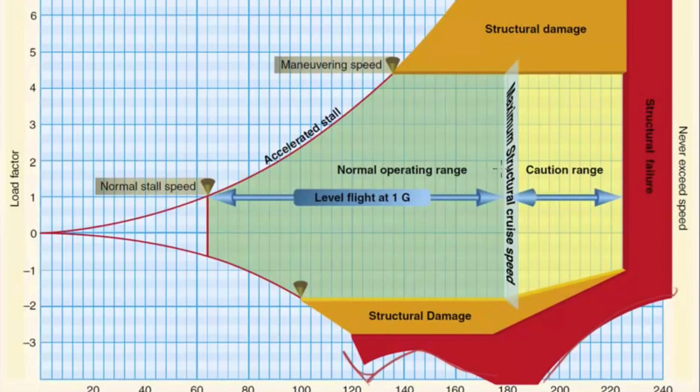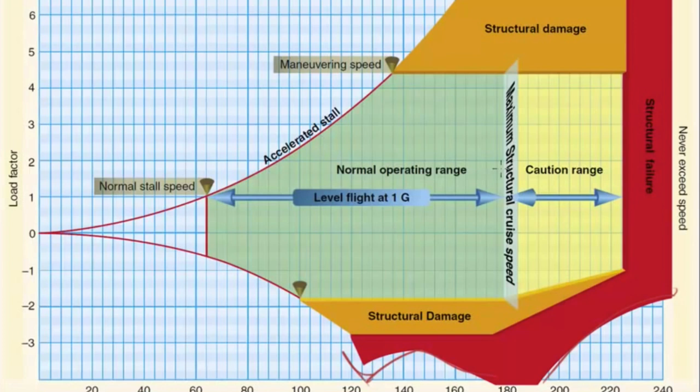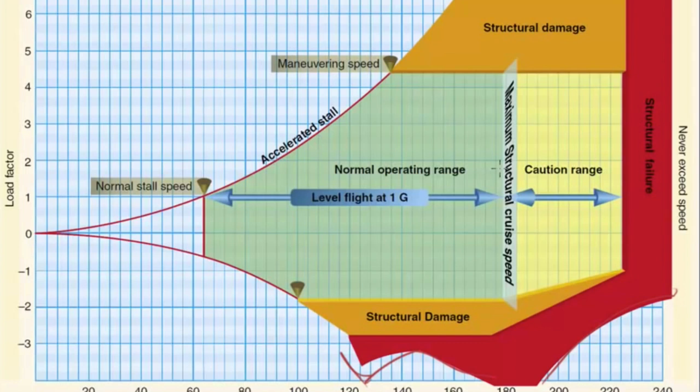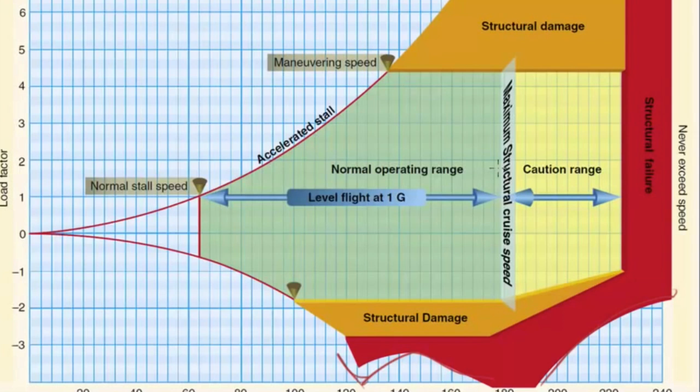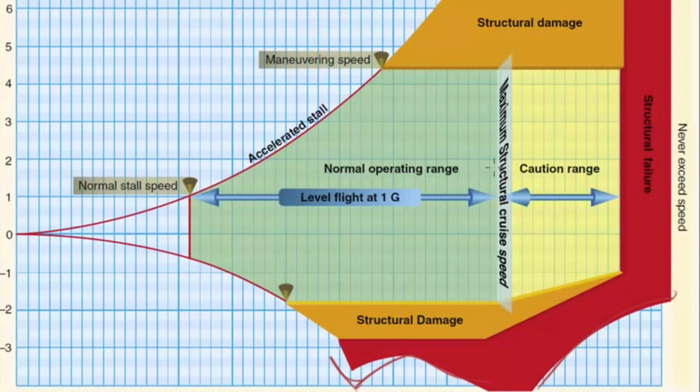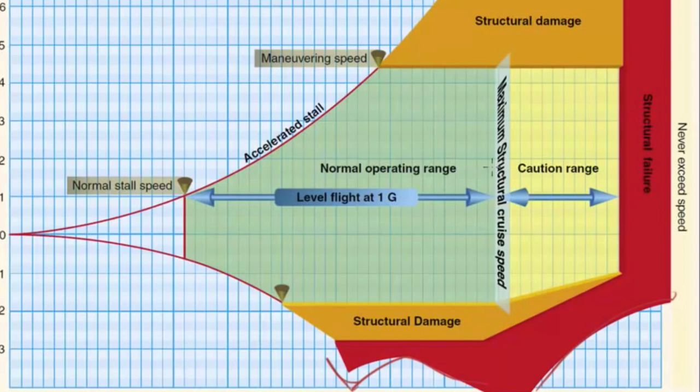In recent years this chart has begun appearing in FAA publications and documents. It's referred to as a VG chart because it compares velocity on the lower axis and g-loading on the vertical axis on the left hand side. It's meant to be a general chart, although it's got some specific data points and plots on it.